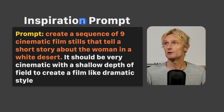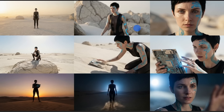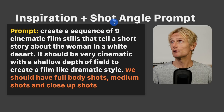For the inspiration prompt, I used: 'create a sequence of 9 cinematic film stills that tell a short story about the woman in a white desert.' That gave me a story idea about a woman who finds a mysterious machine she can use to turn sunlight into blue light. Sometimes I also got images with a 20 by 9 aspect ratio — I think because I used the words 'cinematic film stills' in the prompt. I'm very impressed with the storyline Nano Banana Pro came up with as a base to keep working on.